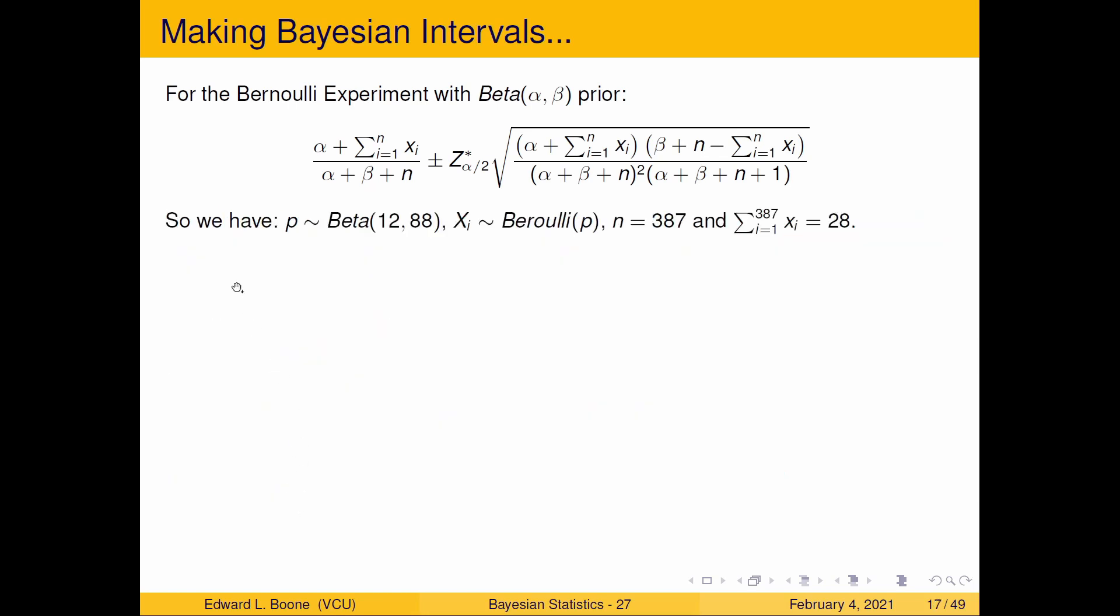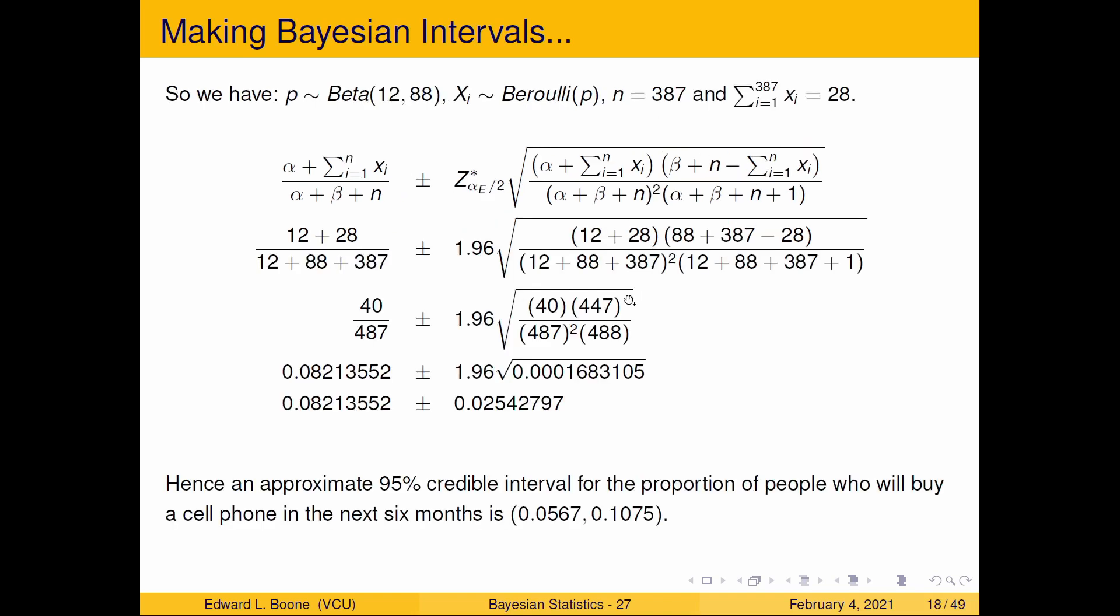So here's our formula, here is the information that we have, we have all the pieces and then we can just start plugging this in to our formula and see what happens. So here we go, here's our data, here's our formula, start plugging in the numbers. 12 for α, 88 for β, whenever we have the sum of the xi we plug in 28, wherever we see an n we plug a 387. And the table value I'm just sticking to the 95% table value that most people use which is 1.96. Plug in all the numbers over here where they belong, calculate, calculate, calculate.